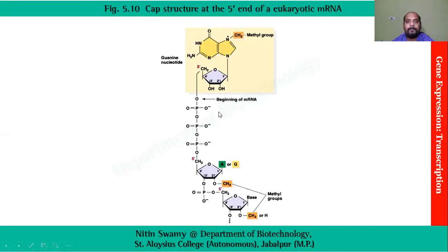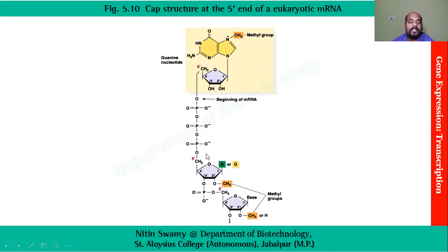In this diagram we can see the structure showing guanine attached to the other group via its 5' end — a 5'-to-5' bond. This is a unique bond, and it ensures that the RNA is not degraded from the 5' side, thus protecting the RNA from degradation.